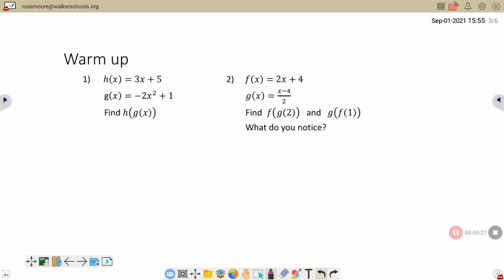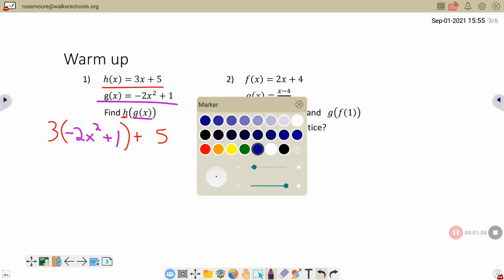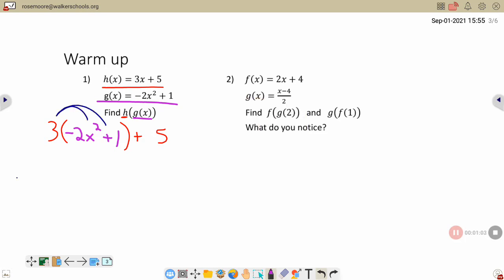For our first composition, we have h of g of x. So that means my furthest out outside function is my h. So I will have 3 blank plus 5. That's my h function. And then inside the blank, I will use my g. My g is negative 2x squared plus 1. And since it is just going to be some mathematical operations, from here we will be saying distribute, which is negative 6x squared plus 3, bring down the plus 5, and combine like terms. And that is the entire thing for number 1.